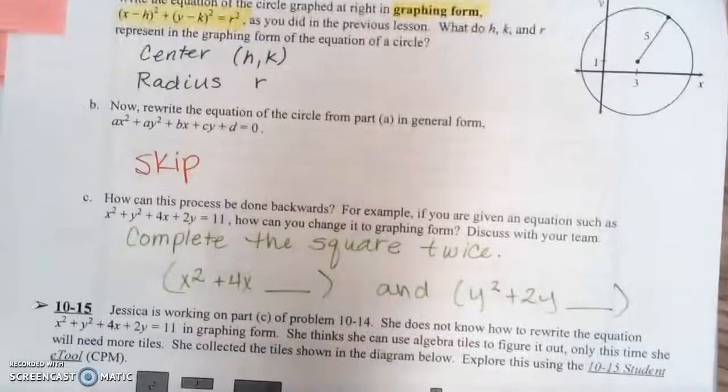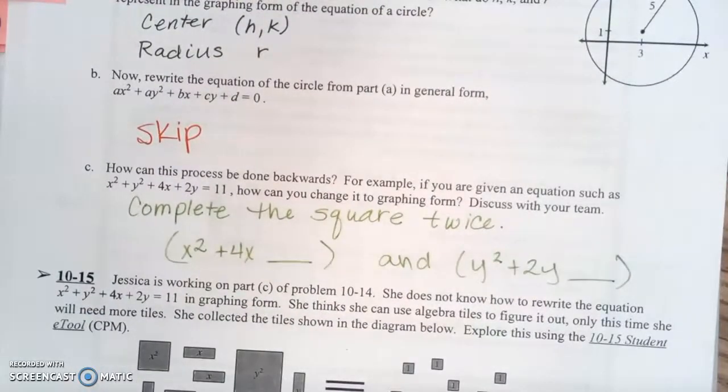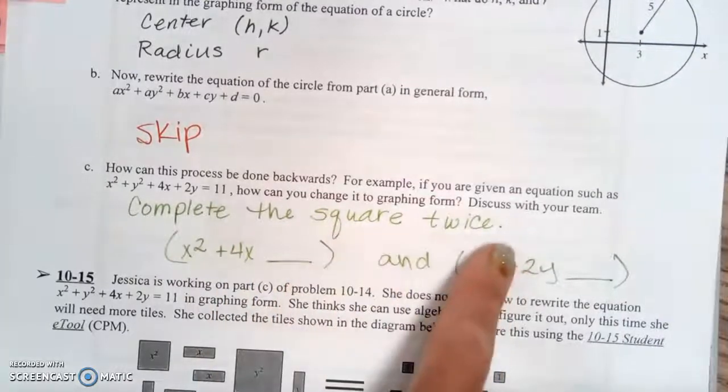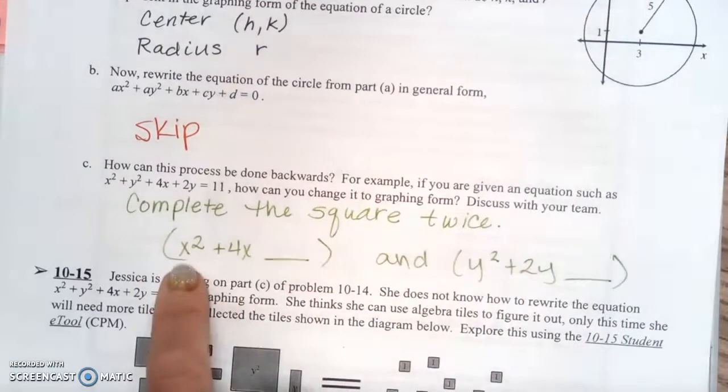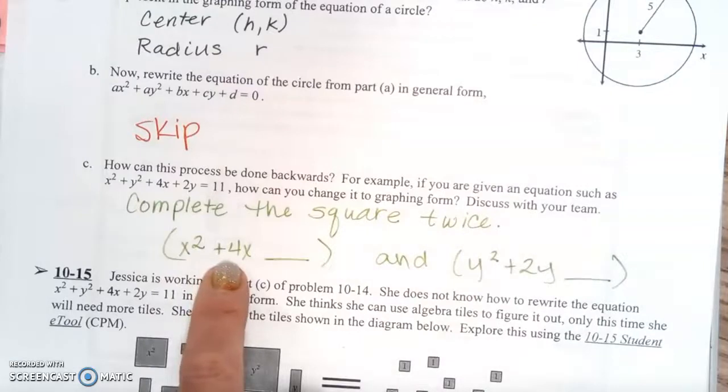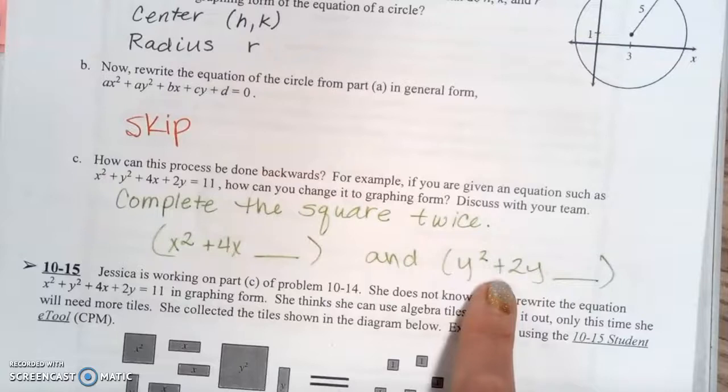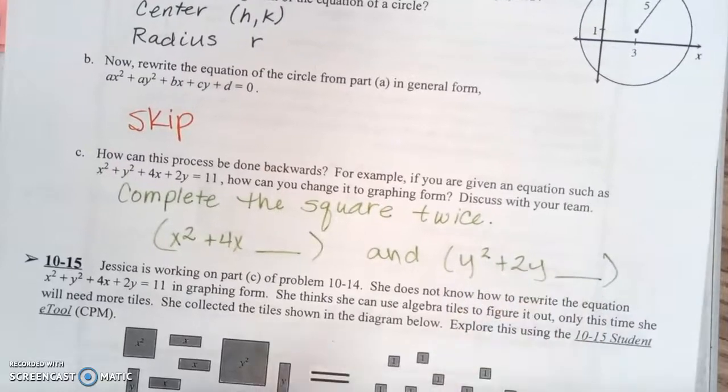Skip part b and jump down to part c, which says, how can this process be done backwards? For example, if you were given an equation such as x² + y² + 4x + 2y = 11, how can you change it to graphing form? Discuss this with your team. So to do it, you would need to complete the square twice. So you're going to group the x² and the 4x together and complete its square. Then you're going to group the y² + 2y together and complete its square.